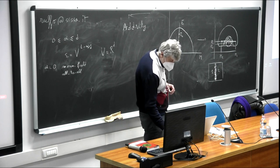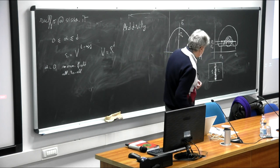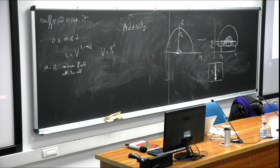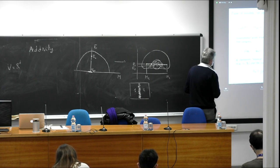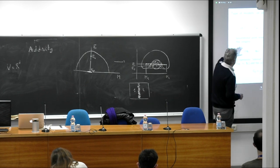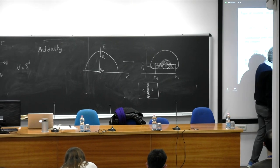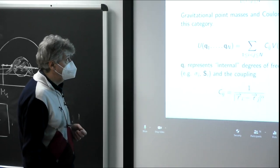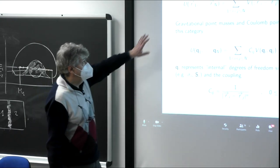Now it's time to be more specific about the models. Both the models I will study and those studied by Niccolò fall in this class. Either we give a potential function of the position of the particles, with possibly some external field acting on each particle — which is the case of a self-gravitating system or Coulomb point charges.